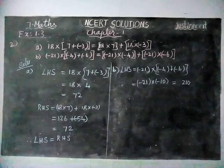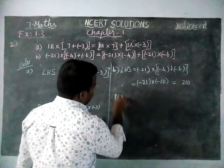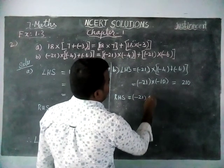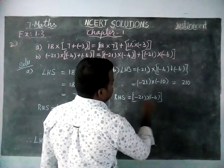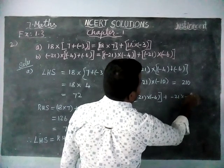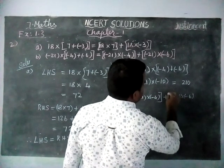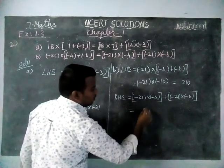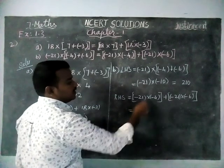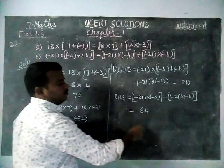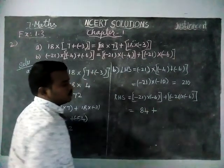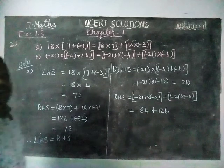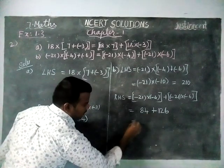For the right hand side: RHS is equal to minus 21 into minus 4 plus minus 21 into minus 6. For minus 21 into minus 4: minus into minus is plus, and 4 ones are 4, 4 twos are 8, so we get plus 84. Next, for minus 21 into minus 6: minus into minus is plus, 6 ones are 6, 6 twos are 12, so we get plus 126. Now we have to add 84 and 126.